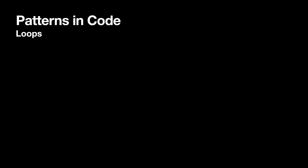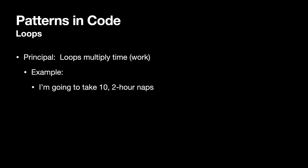So let's talk about loops too. Loops multiply the time or the work being done in the loop. So a simple example, I'm going to take 10 two-hour naps. Total amount of time spent napping? 20 hours. That's an awful lot of napping.